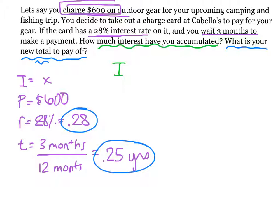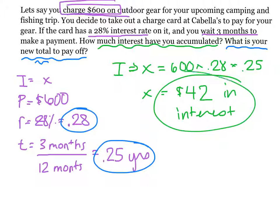Interest. So X equals 600 times .28 times .25. The interest we accumulated on our card was $42 in interest. So that's our first answer.